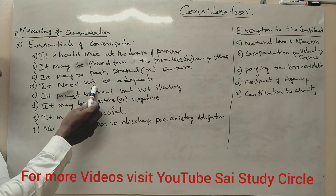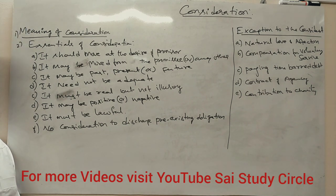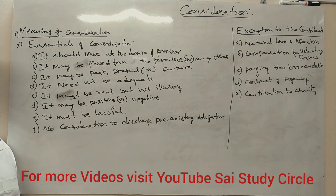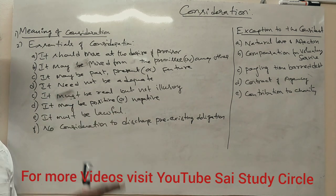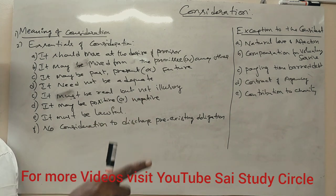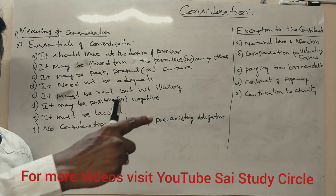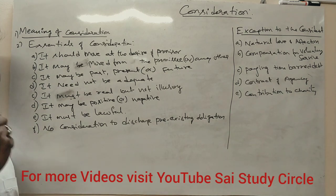The next essential is that consideration need not be adequate. Adequate means the full or reasonable amount. For example, land worth 10 lakh rupees — you may accept only 6 lakhs. Even though it may not be a good deal, there is still consideration present. It need not be adequate, but there must be some consideration.